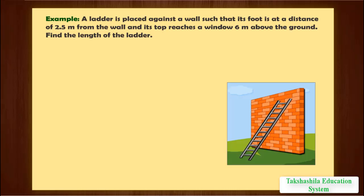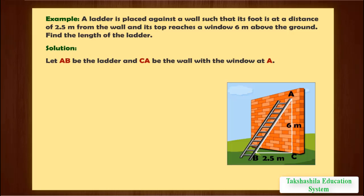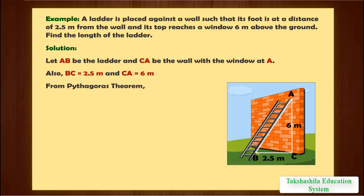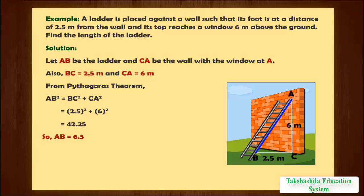Let us now take some examples. A ladder is placed against a wall such that its foot is at a distance of 2.5 metres from the wall and its top reaches a window 6 metres above the ground. Find the length of the ladder. Let AB be the ladder and CA be the wall with the window at A. BC equals 2.5 metres and CA equals 6 metres. By Pythagoras theorem, AB square equals BC square plus CA square equals 2.5 square plus 6 square, which equals 42.25. Taking square root, AB equals 6.5 metres. Thus the length of the ladder is 6.5 metres.